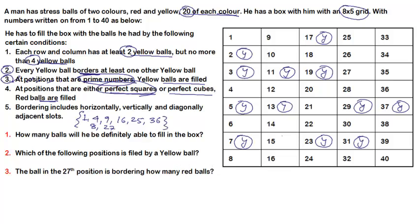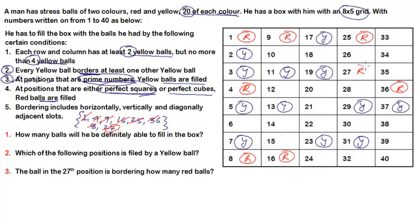So let us put the red balls at positions 1, 4, 8, 9, 16, 25, 27, and 36. I'm using a different color for clarity. So condition 4 is done as well.